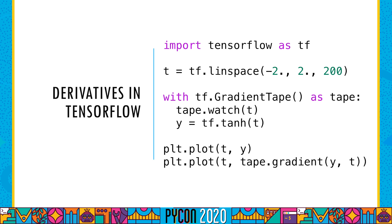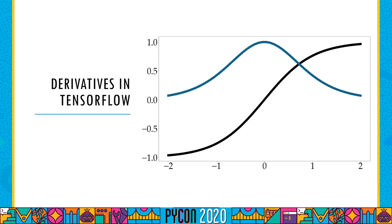TensorFlow is shown here, and it uses something called a gradient tape to watch operations as they happen, and then takes the derivative of those operations. So after we leave the context manager, we can ask the tape what the gradient of y with respect to t is. This is the plot — it looks exactly the same as the one from JAX, or the one we will see with PyTorch. The black line is the hyperbolic tangent, and the blue line is the derivative.